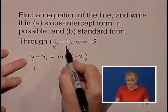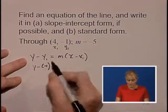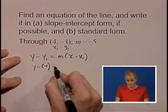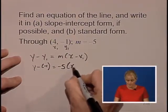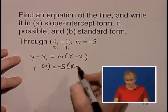So we'll have y minus y1, which is negative 1, so watch your signs, equals m, which is negative 5, times (x minus x1), which is 4.